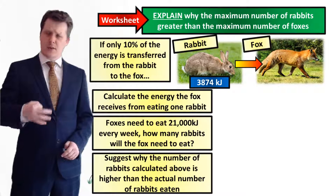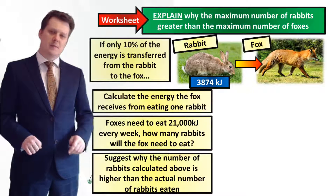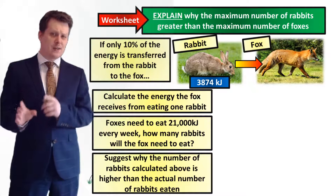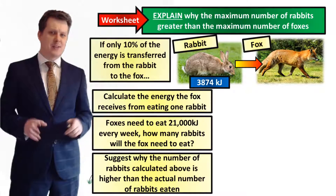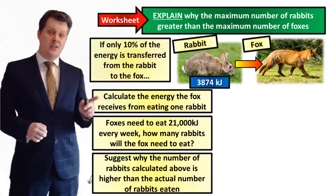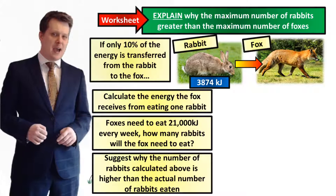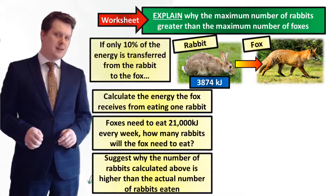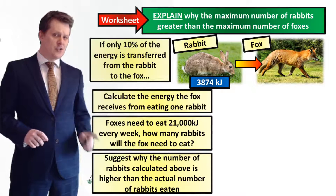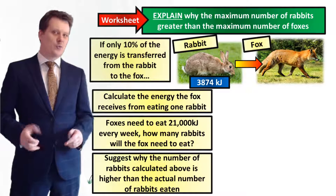Next, we're going to have a look at the first three questions on our worksheet — all the data and questions are going to be displayed on screen. Thinking back to our recap, if only 10% of the energy is transferred from the rabbit to the fox, and our rabbit contains 3,874 kilojoules of energy, calculate the energy the fox receives from eating one rabbit. In order for a fox to survive, it needs to eat 21,000 kilojoules every week — how many rabbits would it need to eat to get 21,000 kilojoules? And suggest why the number of rabbits calculated is higher than the actual number of rabbits eaten.